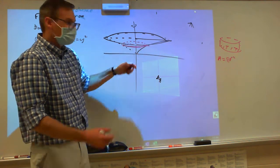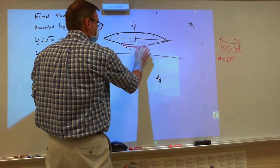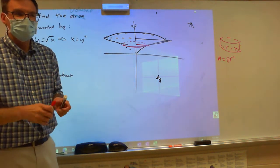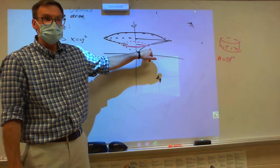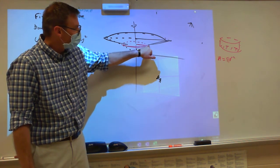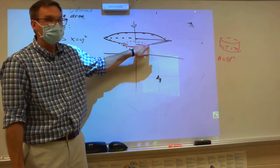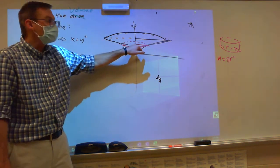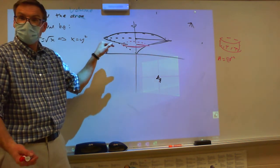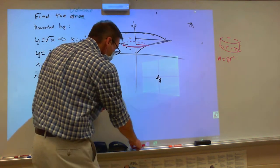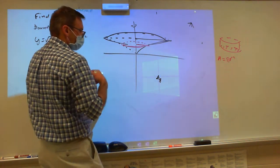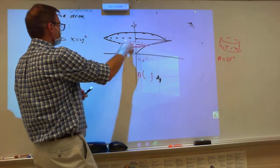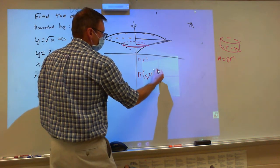Here's our rectangle. We need to find the radius — that rectangle is our radius. Since that rectangle is our radius, I need to find the length of it: right minus left. What's the right function? Since it touches that function it's y squared. The left function, since it touches the axis, is zero. When you think of pi r squared, your radius is y squared minus zero, so that's going to give us y squared squared.